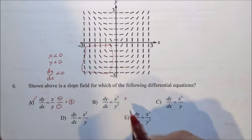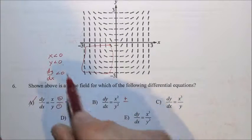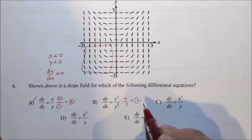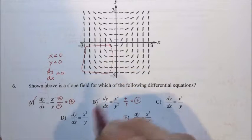Same thing here with B. X is negative, but a negative squared is a positive. Y is negative, but a negative squared is a positive. Positive divided by a positive is a positive, but we see negative slopes. B is out.